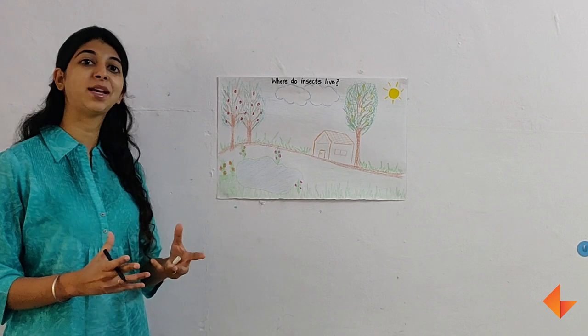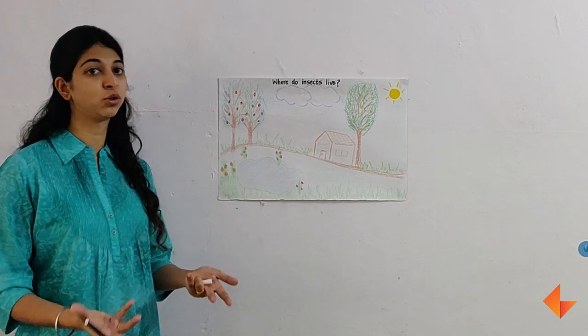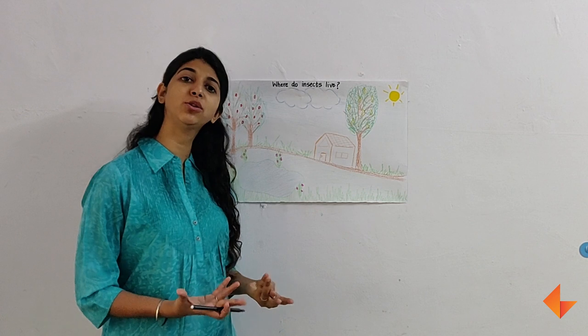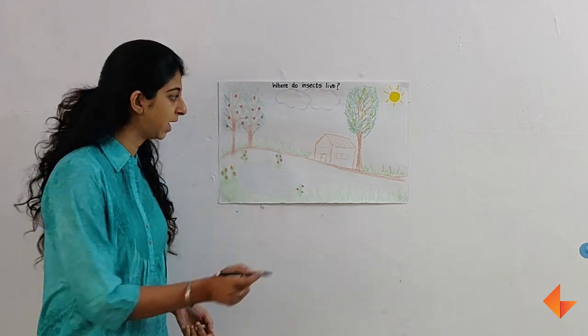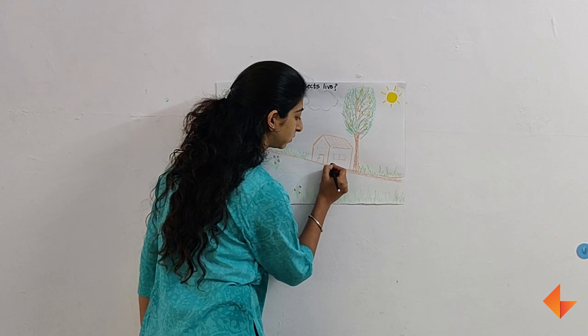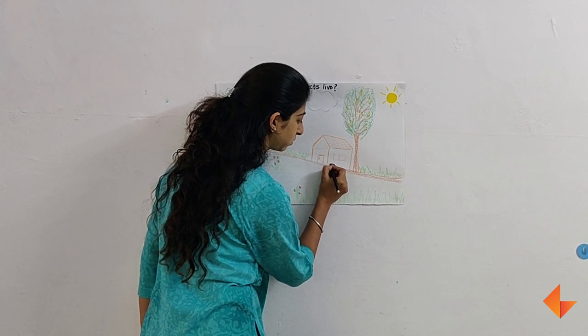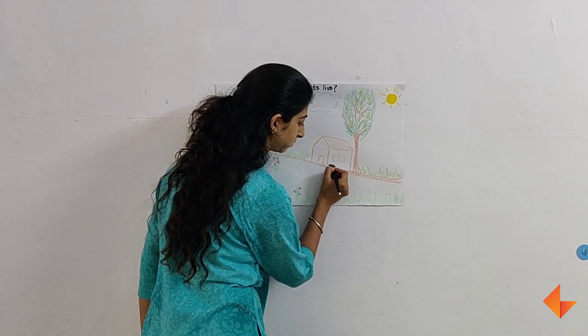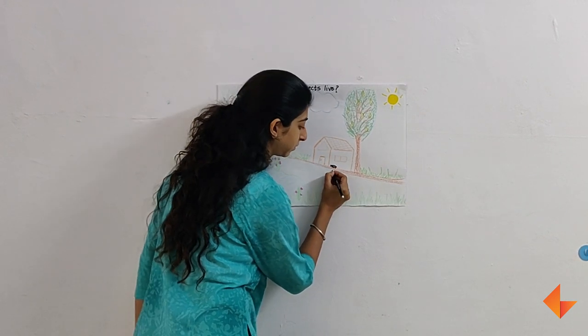And they will tell you many times in the house or maybe on the road. So ask children, in this picture where do you think I should draw a cockroach? And if they say in the house, make sure you draw a cockroach and label it.